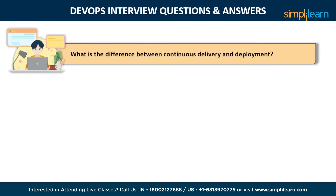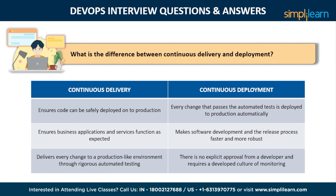The third question is: what is the difference between continuous delivery and continuous deployment? Continuous delivery ensures that you can safely deploy onto production. But continuous deployment ensures that every change that passes through automation testing is deployed to production automatically, instead of manually. Continuous delivery ensures business applications are delivered as they were expected, while continuous deployment makes sure that software development and release processes are smooth and faster, with changes made to a production environment through rigorous automated testing. With continuous deployment, there is no explicit approval required from a developer.